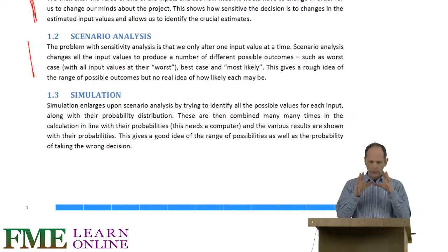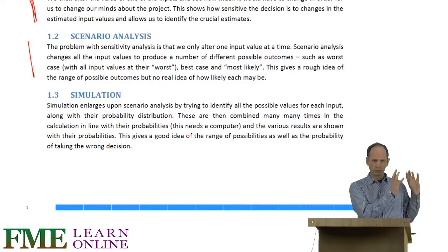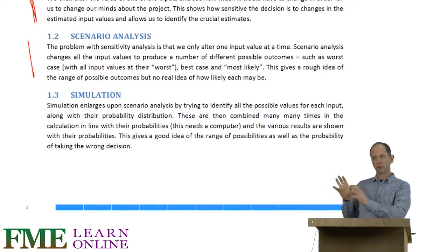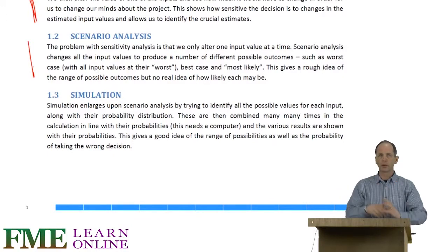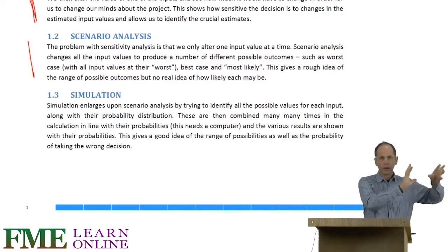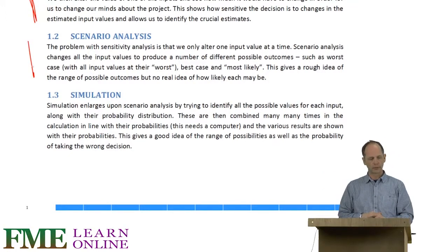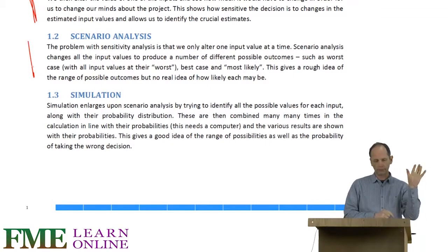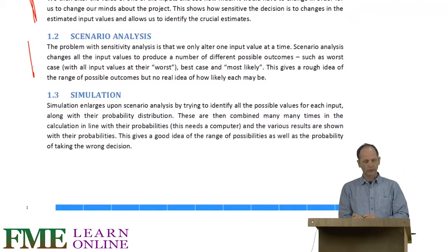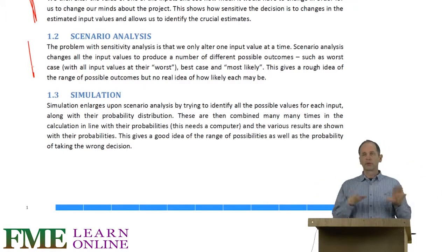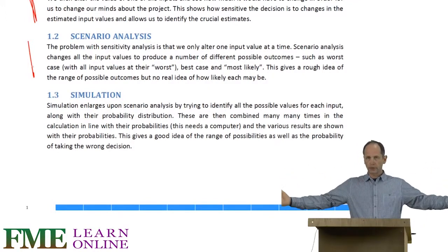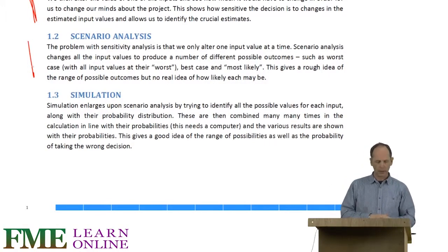Scenario analysis says: here is our most likely situation, now let's look at the worst case situation where everything is on the bad side of our estimates, or a best case where everything is on the good side. We can then calculate a best case, a worst case, and a most likely outcome. Or if we want to go to extremes, we could have ten different scenarios. What it doesn't tell us is how likely each of those three — worst case, best case, most likely — actually are. All we've got is an idea of the spread of possibilities and hence the volatility there might be in the outcome.